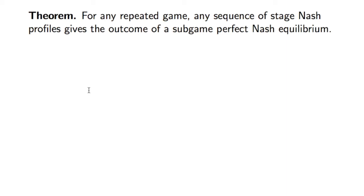So remember we talked about subgame perfection before. The proof of this is relatively straightforward. First of all, we have to prove that a sequence of stage Nash profiles would be a Nash equilibrium, and then that it would be a Nash equilibrium for every subgame. The first part is relatively easy.